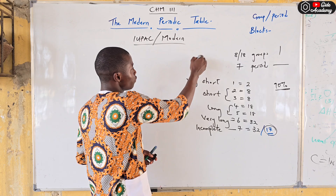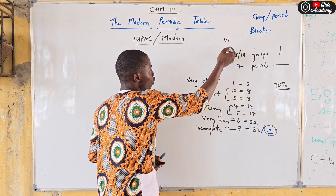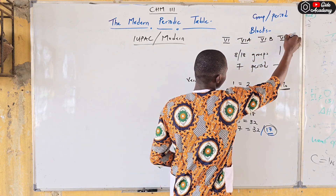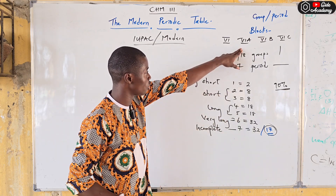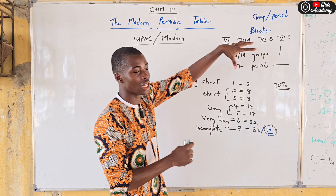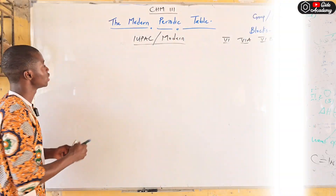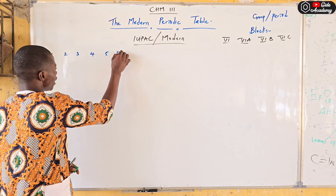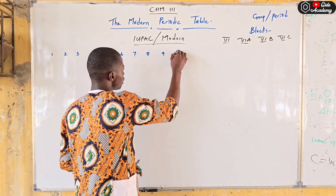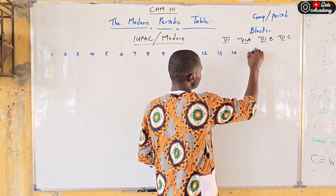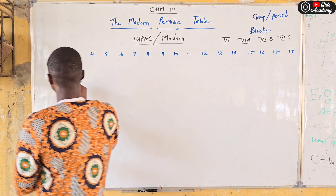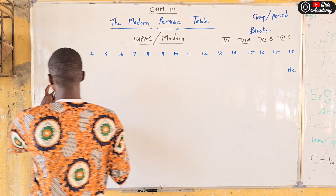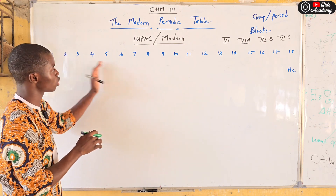What is the difference between the IUPAC and the modern periodic table? A question might come in this format: 'Oxygen belongs to group dash in the modern periodic table.' We all agree the periodic table has 18 groups. Group 1, group 2, going across to group 18, with hydrogen in group 1 and helium in group 18.